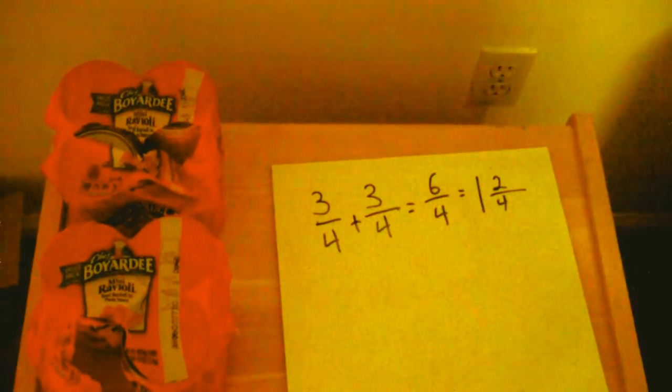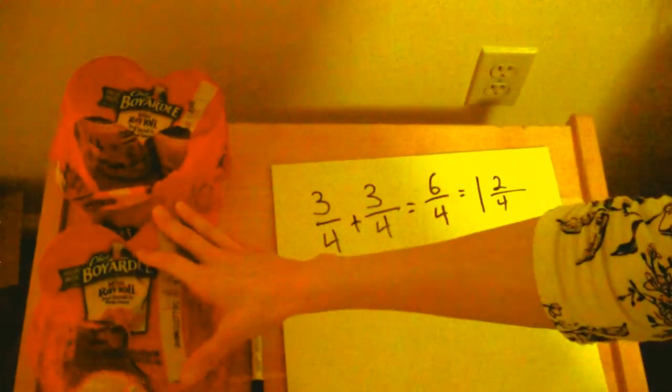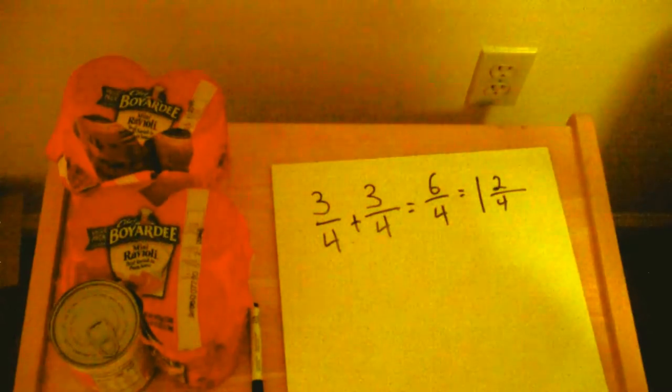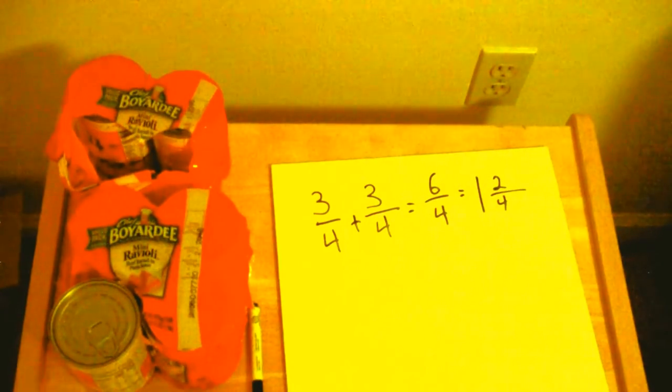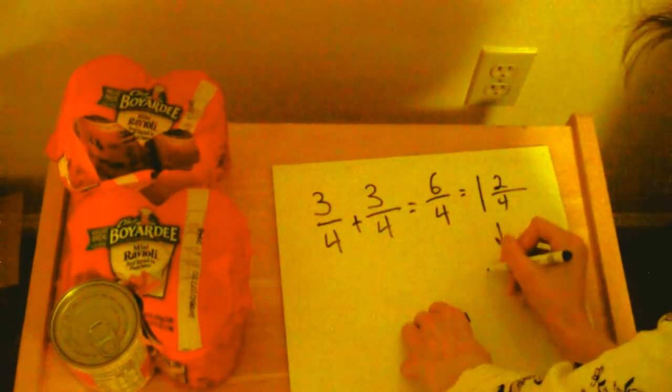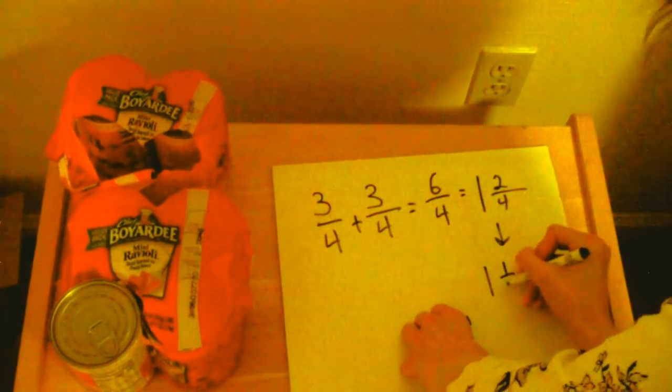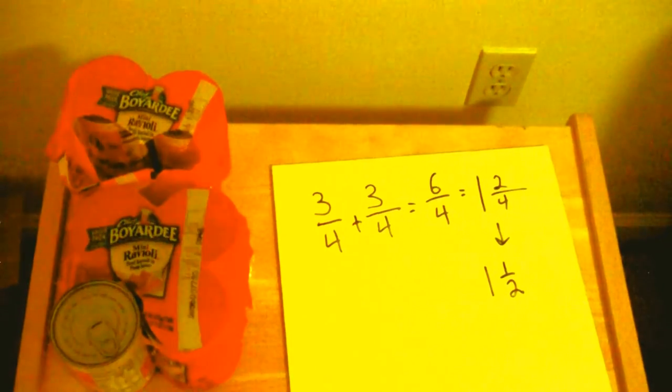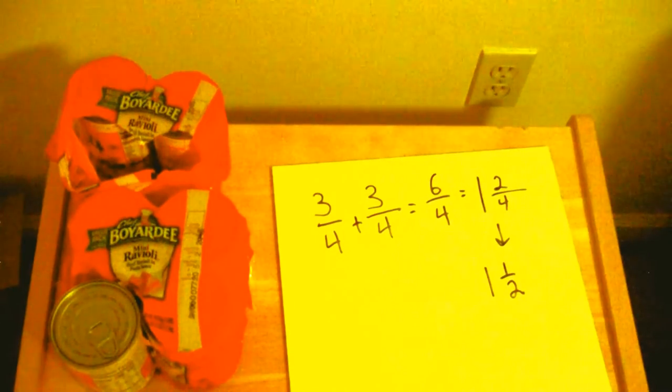Let's double check our work. I'm going to take one of these cans and put it in the other one just to make sure we're correct. Did it work? Sure did. I have one and two-fourths. Can I simplify that even further? Yep. I can do that if I want to. So one and a half. Voila! Equivalent fractions, equivalent mixed numbers. And more ravioli for me.